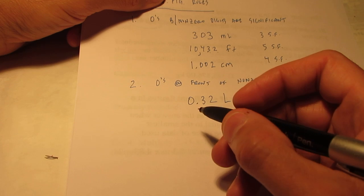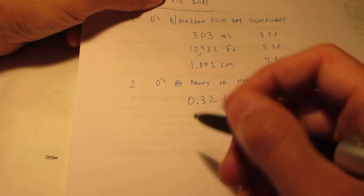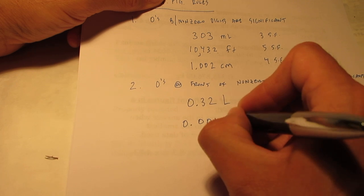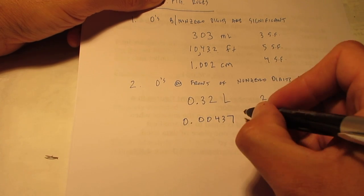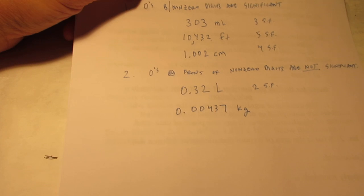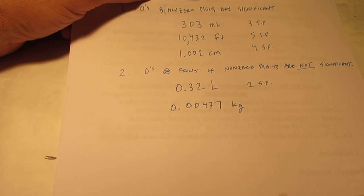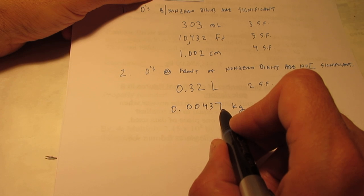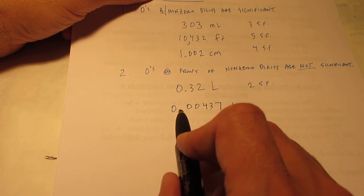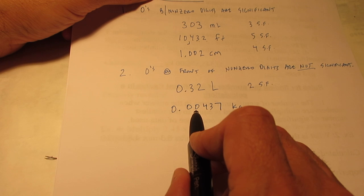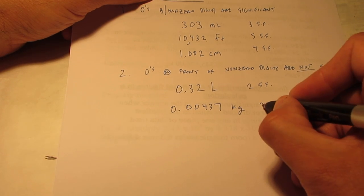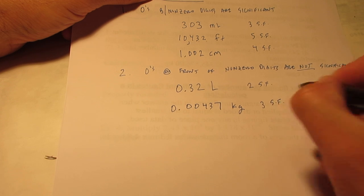If I had something like this, 0.00437 kilograms. Think about that. Well, non-zero digits are significant, so those three are. And these three zeros are in front of a non-zero digit, so those are not significant. So, that measurement would have three SIGFIGs.